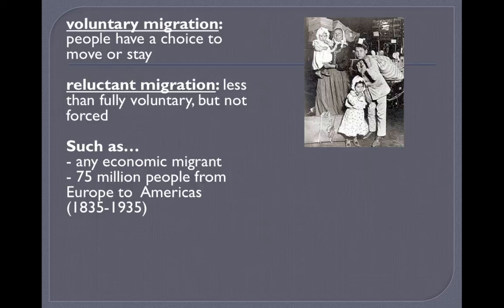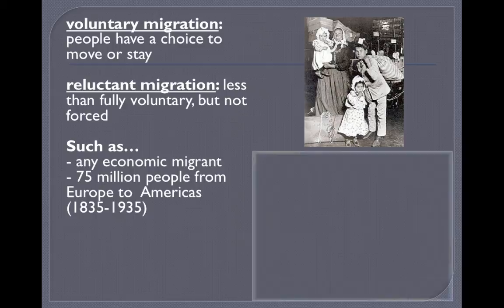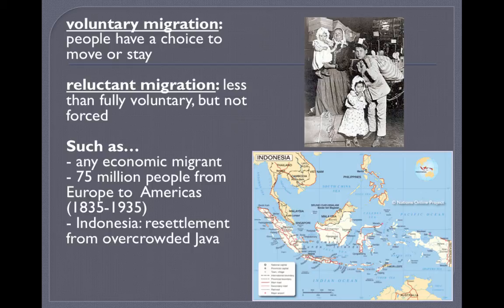Over that 100-year span, we have the Statue of Liberty near Ellis Island asking for your tired, your poor, your huddled masses yearning to be free, and people took that as an open invitation and came in droves. Sometimes you might want to stay but there's just no room — in Indonesia, the island of Java was relatively overcrowded, so people had to migrate elsewhere as the population grew.